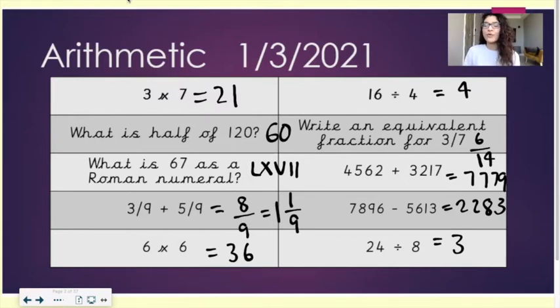Next question. 4,562 plus 3,217 equals 7,779. 7,896 take away 5,613 equals 2,283. And lastly, 24 divided by 8 equals 3.